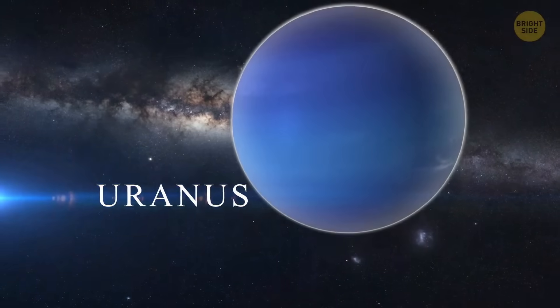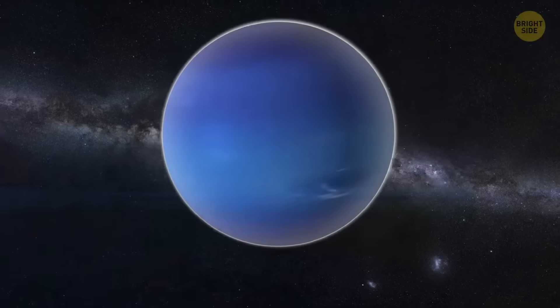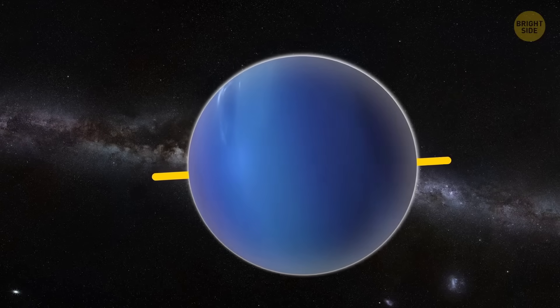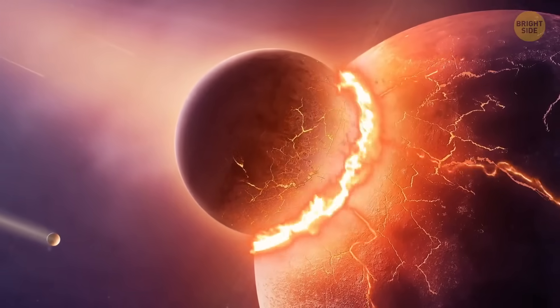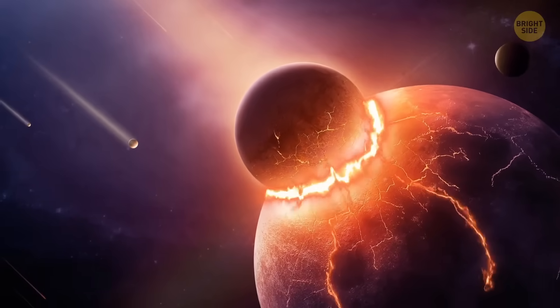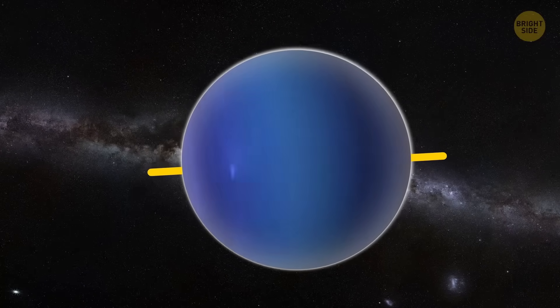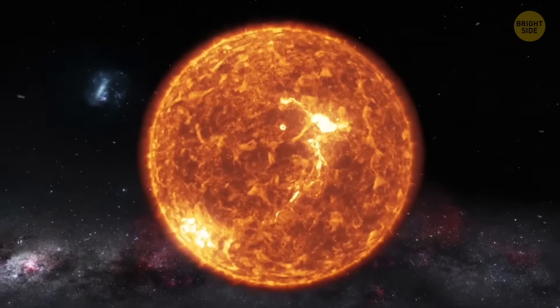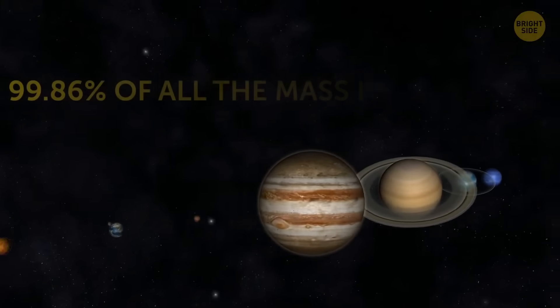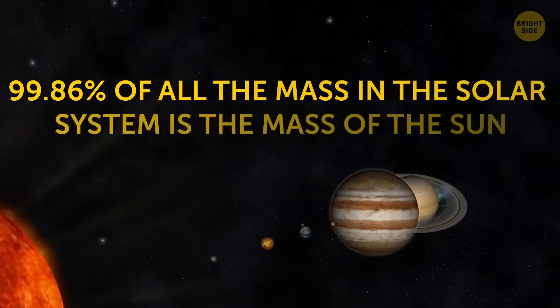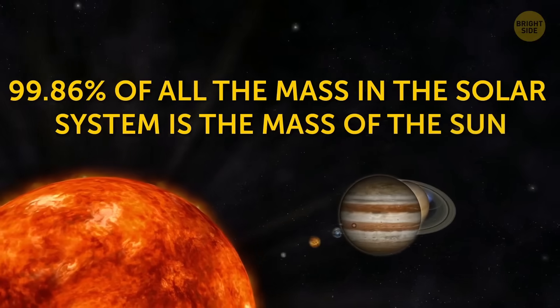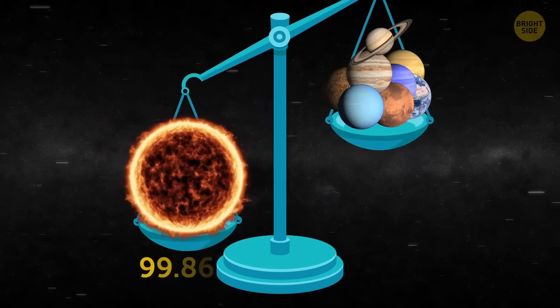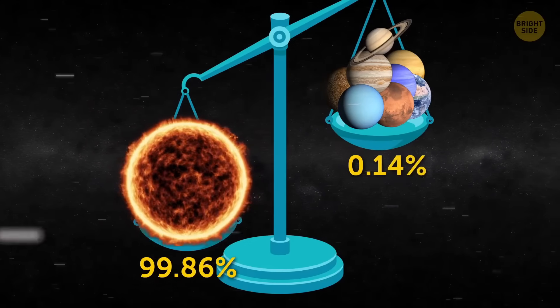The planet Uranus rotates on its side, and astronomers have no idea why the planet has chosen such an unusual position. The culprits could be ancient mega-powerful collisions, but so far it's just a theory. By the way, this is the only planet laying on its side. Our Sun is insanely massive. Want some proof? Well, 99.86% of all the mass in the Solar System is in the mass of the Sun. In particular, the hydrogen and helium it's made of. The remaining 0.14% is mostly the mass of the Solar System's 8 planets.